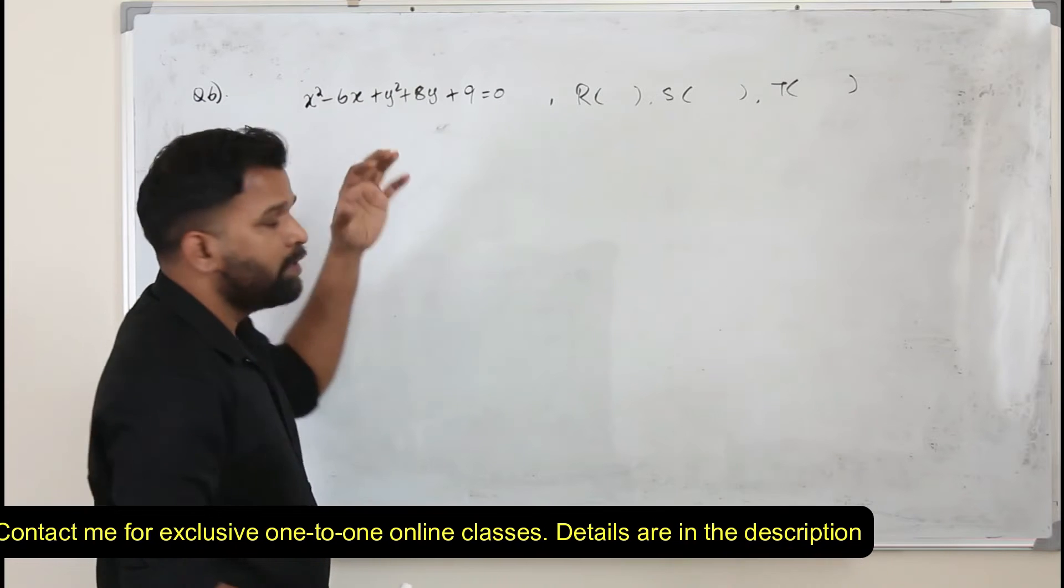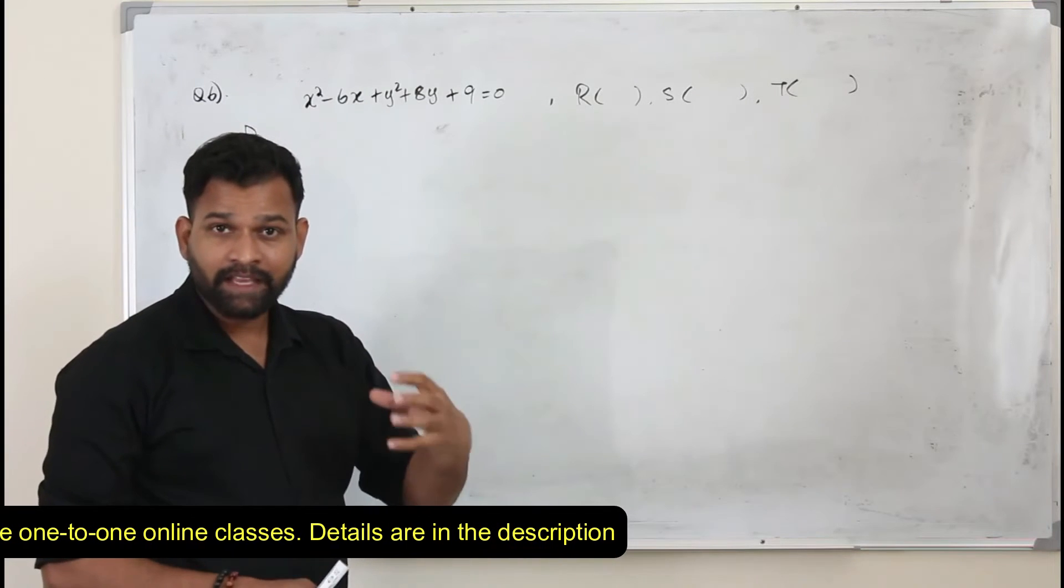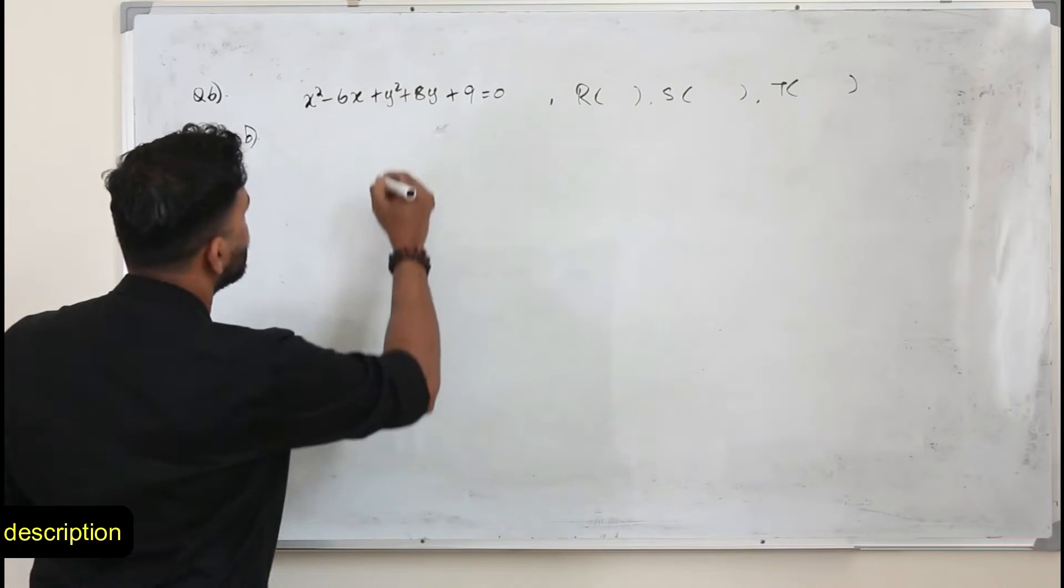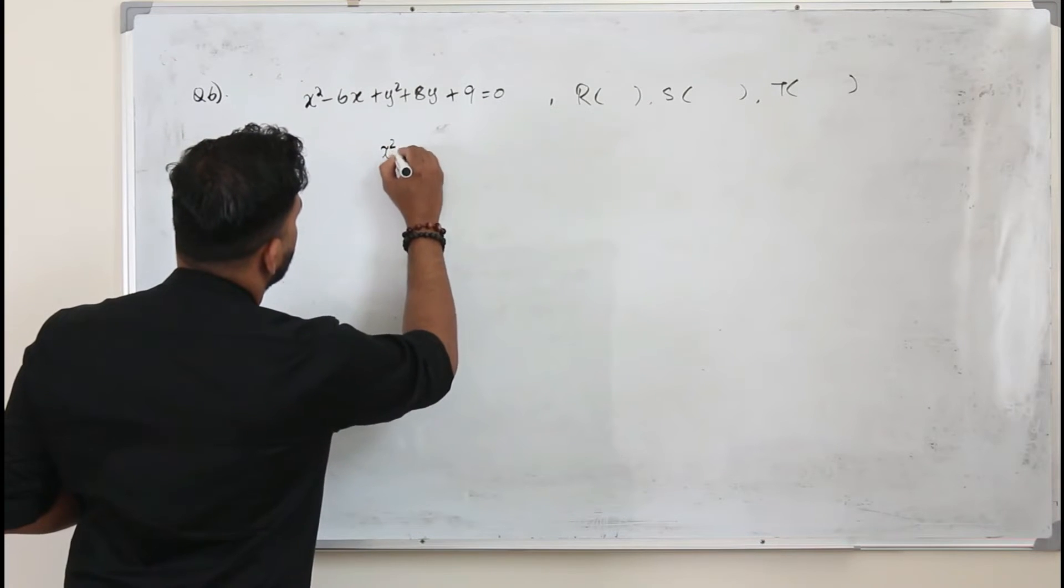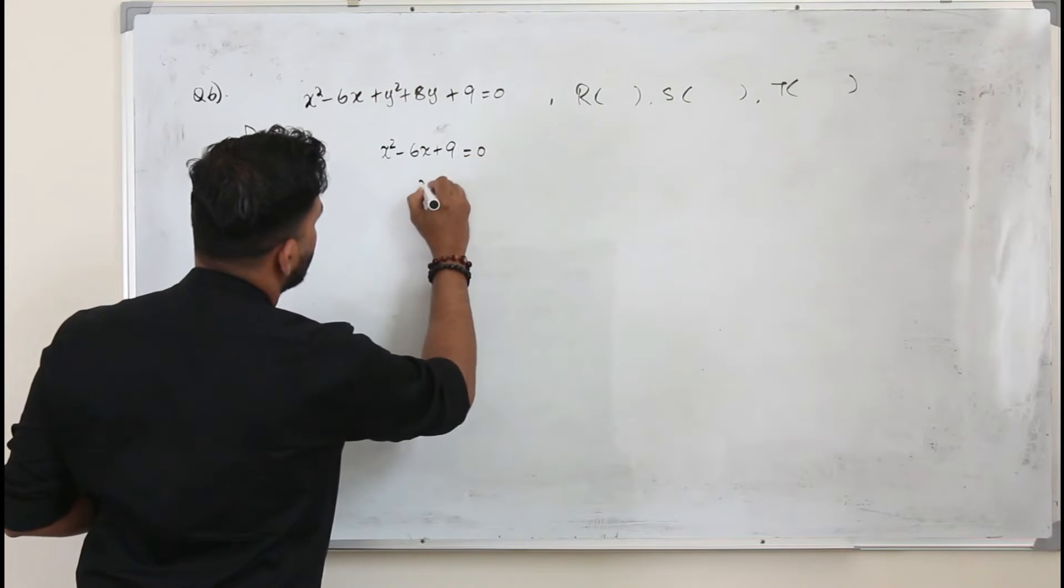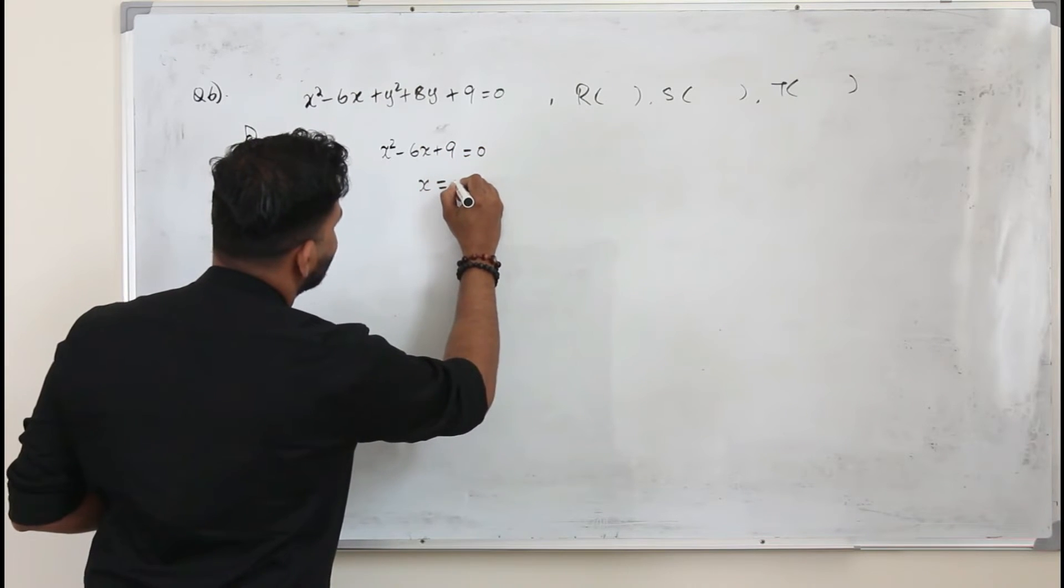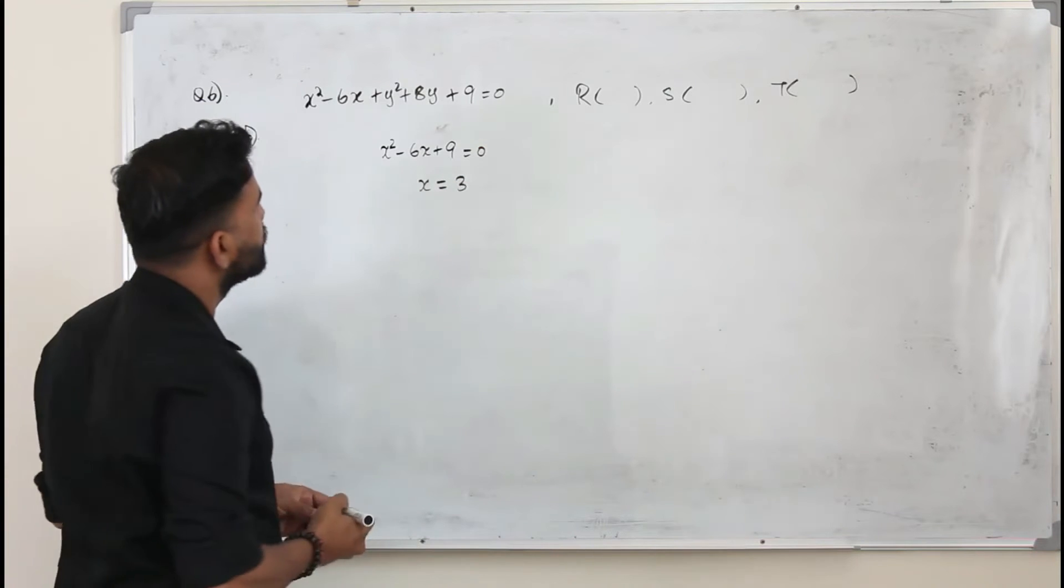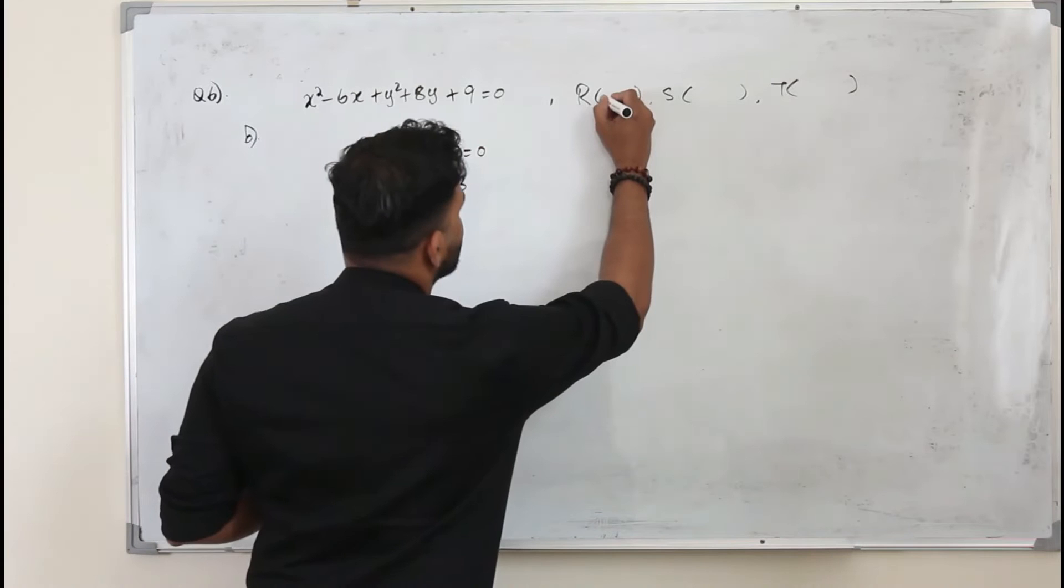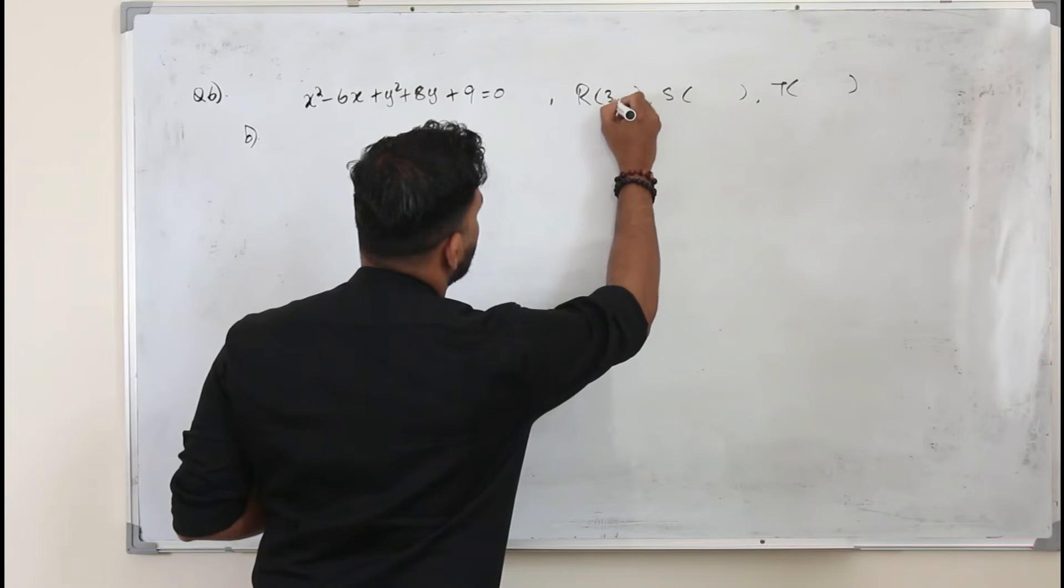When the circle meets the x-axis, we replace y by 0. When you put y by 0, it's x squared minus 6x plus 9 equals 0. So you get x equals 3, because this is x minus 3 whole squared. So the point, take it as r, x is 3, y is 0.